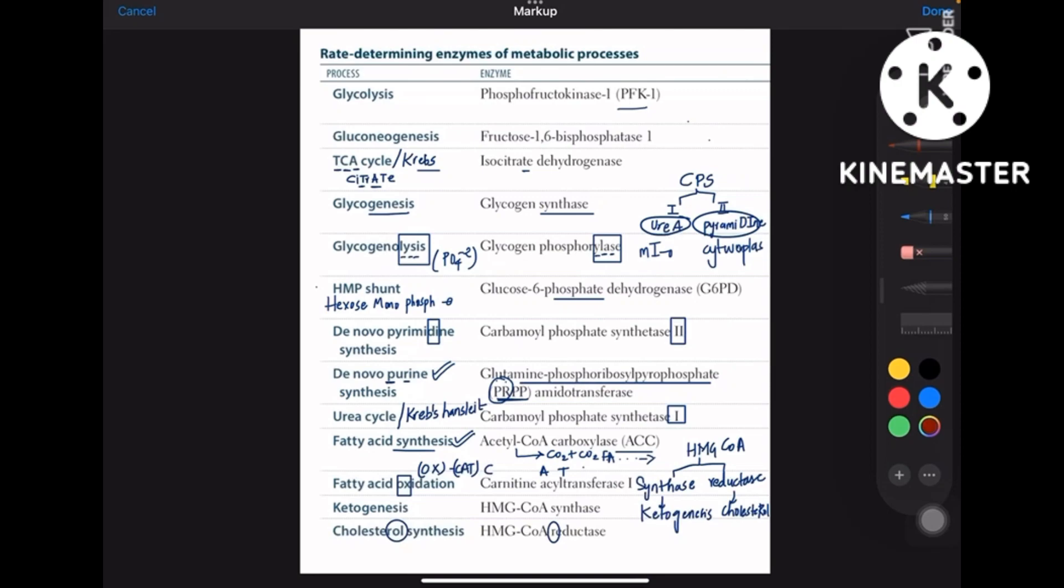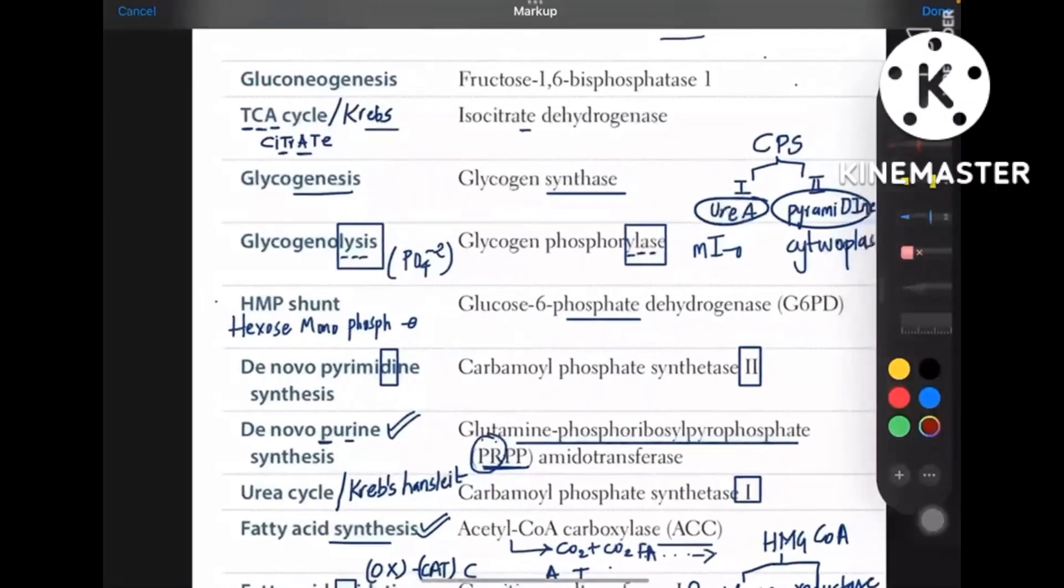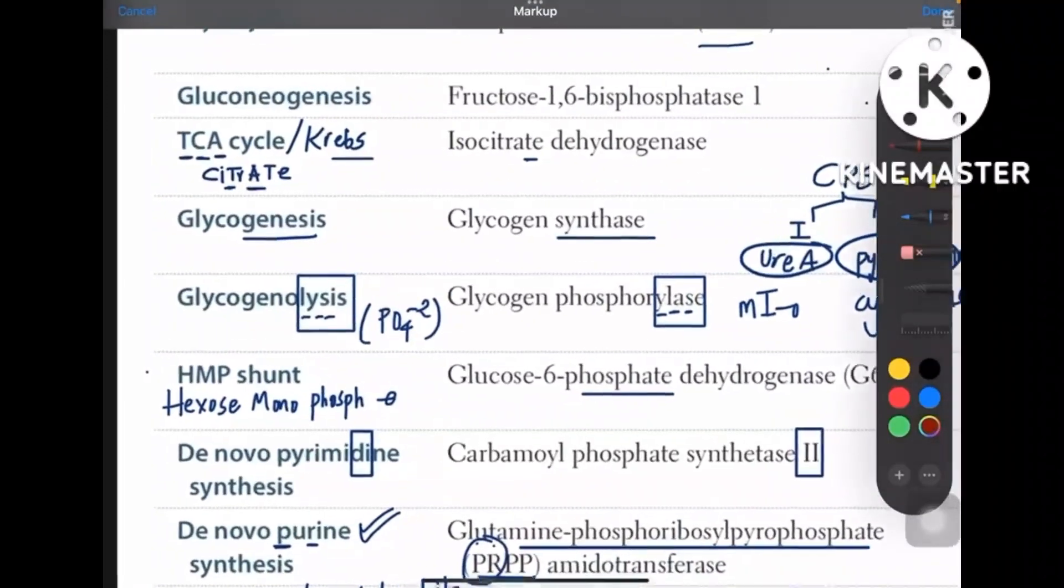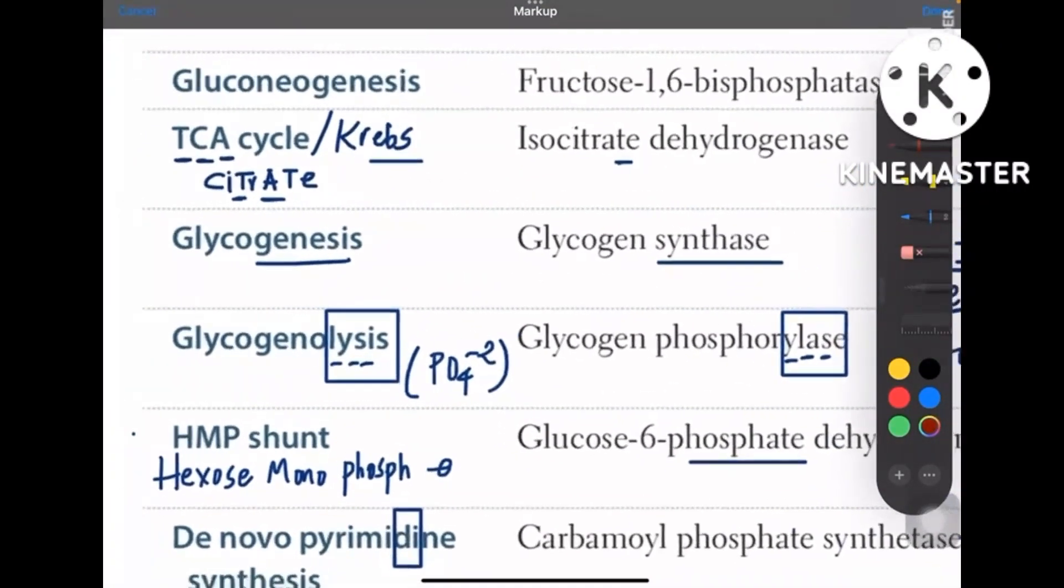So let's start from the mnemonic part itself, that is from the TCA cycle, that is Krebs cycle. So in the name TCA cycle you have the letters T, C, and A, right? So in citrate also you have T, C, and A, so remember it like that.